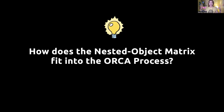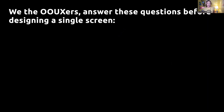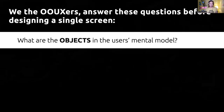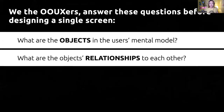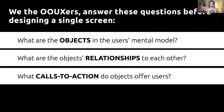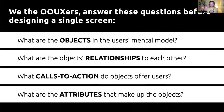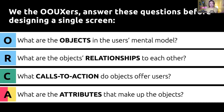So how does the Nested Object Matrix fit into the overall ORCA process? We — the OUXers — answer these questions before we design a single screen: What are the objects in the user's mental model? What are the objects' relationships to each other? What calls to action do objects offer users? And what are the attributes that make up the objects?